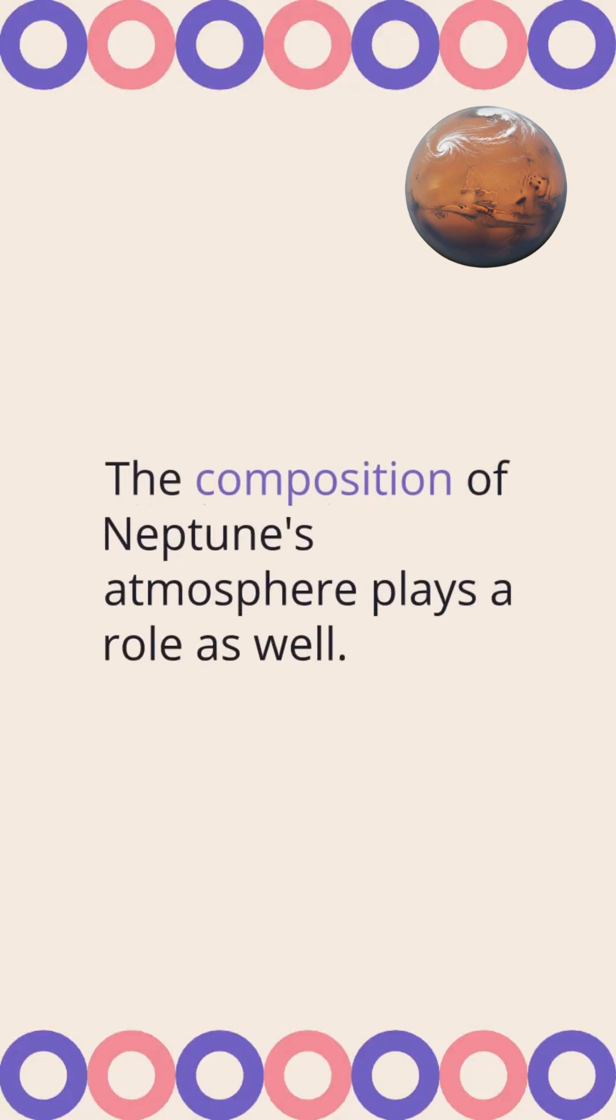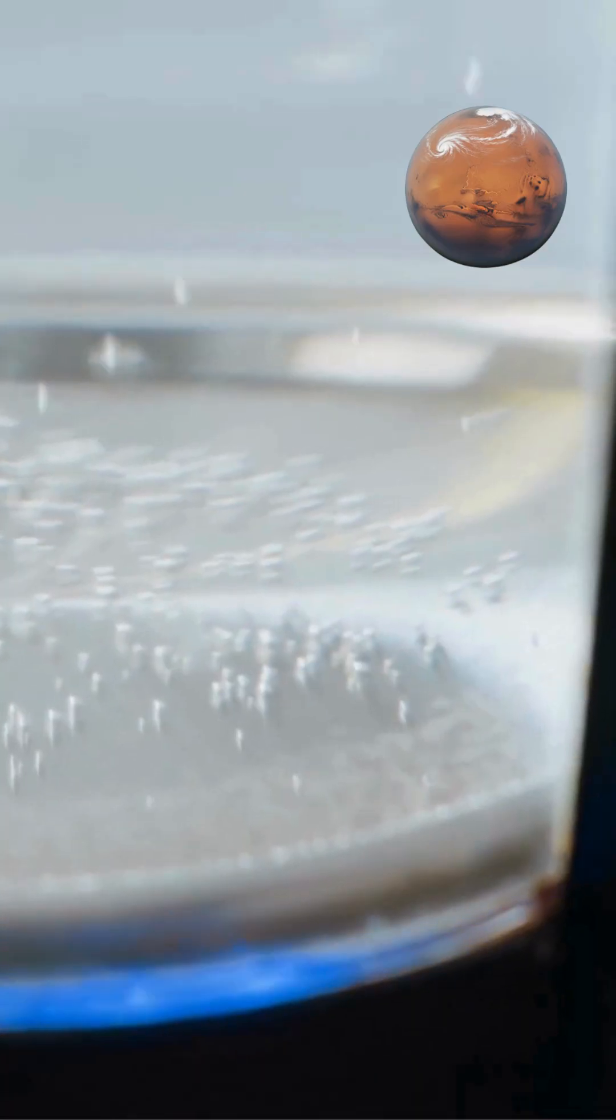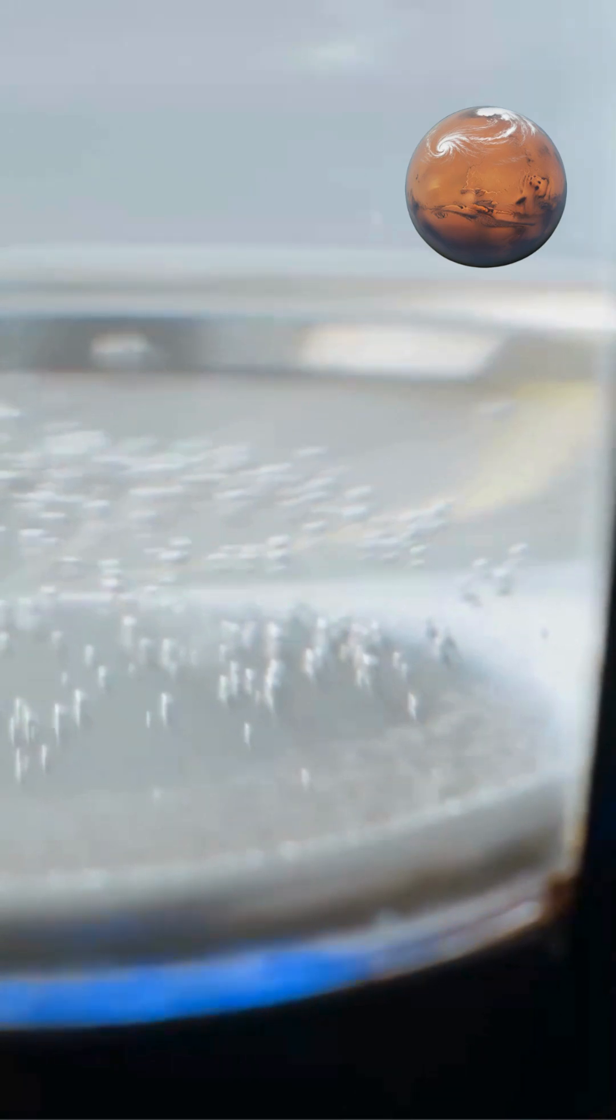The composition of Neptune's atmosphere plays a role as well. Unlike Earth's water ice clouds, Neptune's cirrus clouds consist of frozen methane crystals.